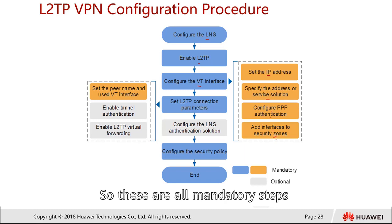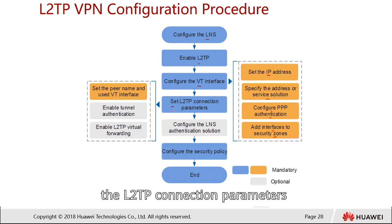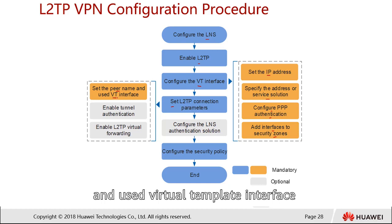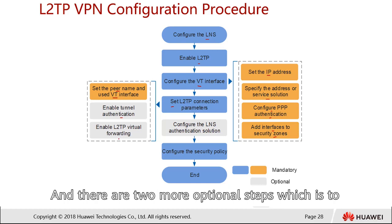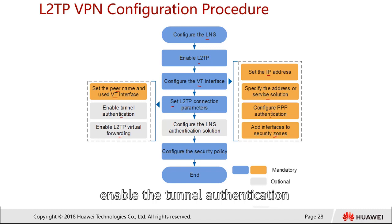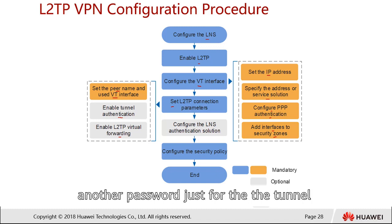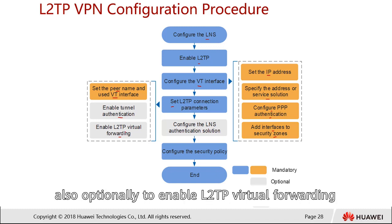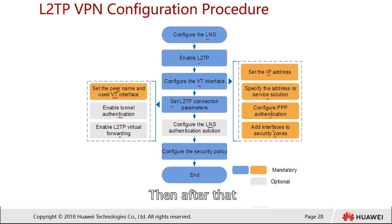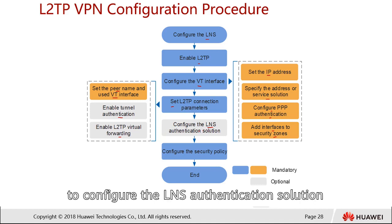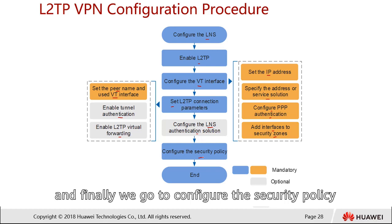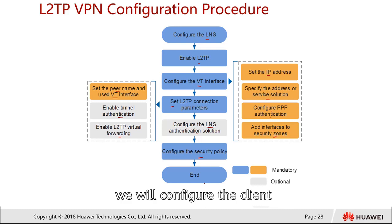These are all mandatory steps. Next we configure the L2TP connection parameters, setting the peer name used for the virtual template interface. There are two optional steps: enabling tunnel authentication, which is like an additional password just for the tunnel, and optionally enabling L2TP virtual forwarding. We can also optionally configure the LNS authentication solution. Finally, we configure the security policy, and after that we configure the client.